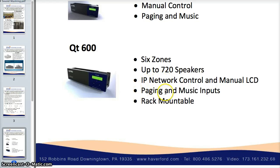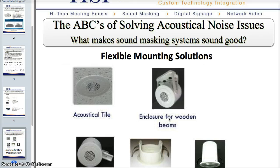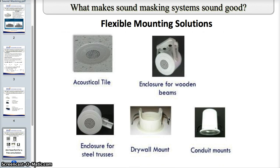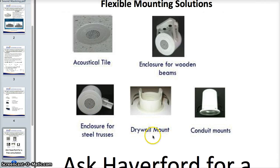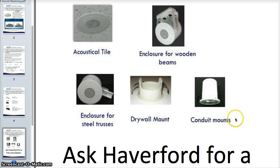The QT 600 can also handle paging from your reception office and play music from the system as well. There are many flexible mounting solutions available. The most popular is the acoustical ceiling tile mount, but there are also enclosures for wooden beams and I-beams, an enclosure for steel trusses, a drywall mount, and a conduit mount.